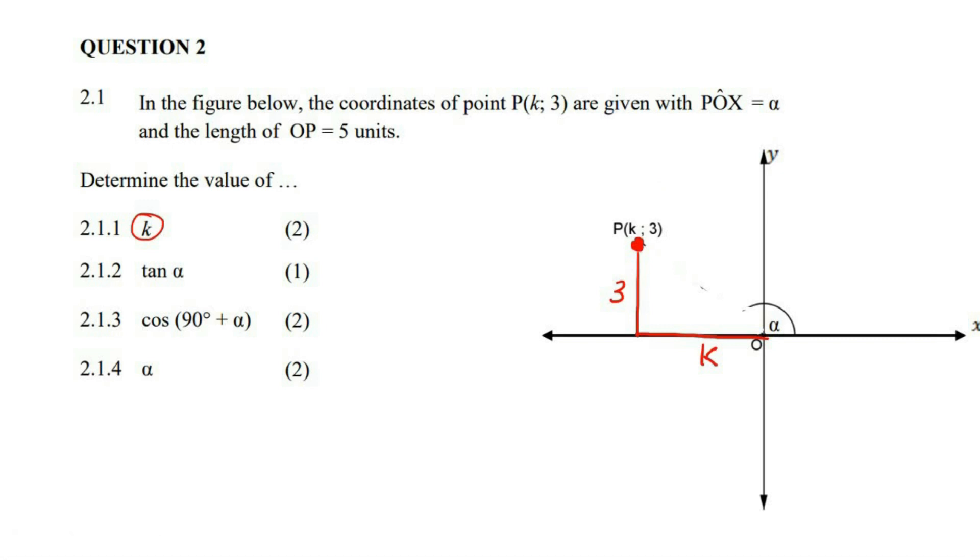Now I'm going to put everything back. So now we know that this is 5. Now we can use Pythagoras, and we say 5 squared equals 3 squared plus k squared. So that would be 25 equals 9 plus k squared. That means 16 equals k squared. So k, if you take the square root, is plus or minus 4.